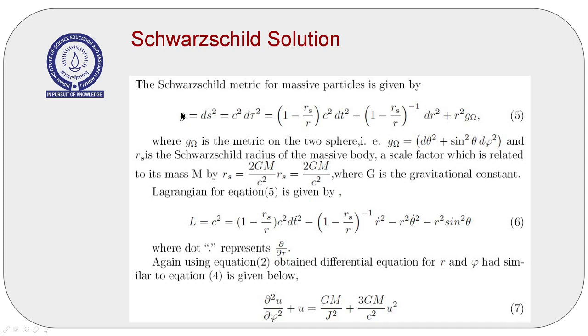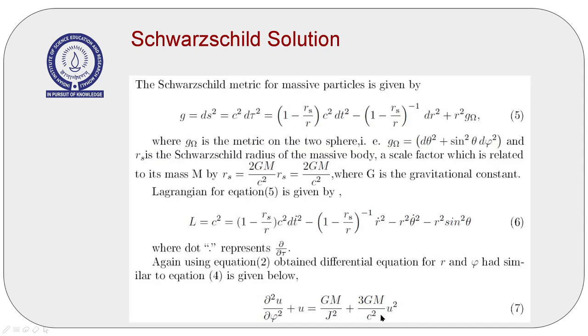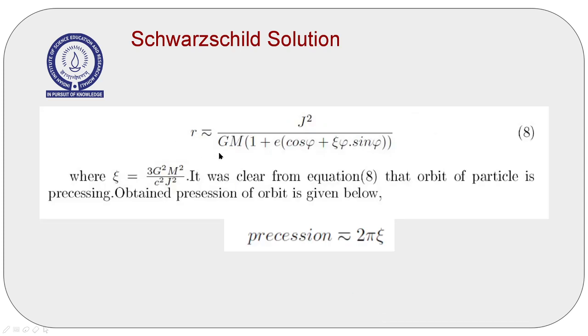Now let's review the Schwarzschild solution, which is the solution of the Einstein equations. From the Schwarzschild metric, Lagrangian can be written in this way. After solving the Euler-Lagrange equation of motion, this differential equation is obtained. It is similar to the classical approach solution with this extra term. This extra term can be the perturbation term, and after solving the differential equation using perturbation method, we get this relation for which the precession is given by this term.